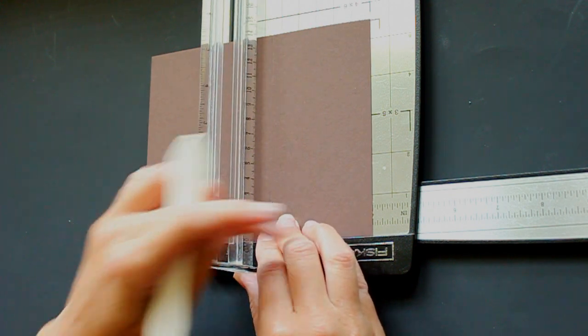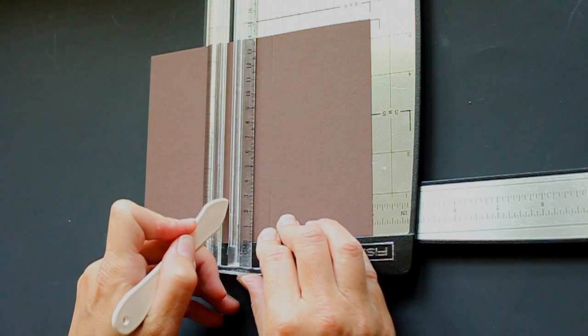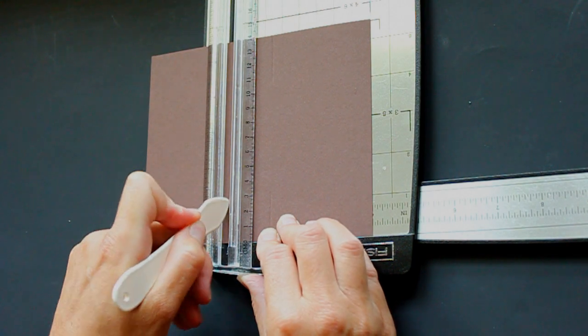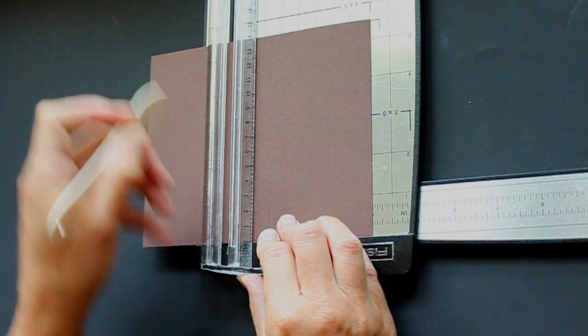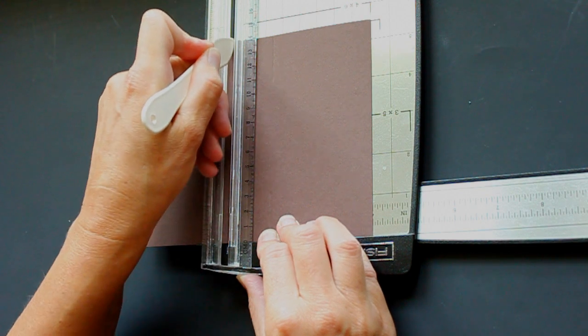Move your cardstock over to the 4 inch mark and repeat. Score from 0 to 1 1⁄4, and from 4 1⁄4 to 5 1⁄2.